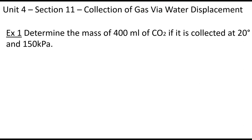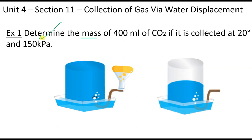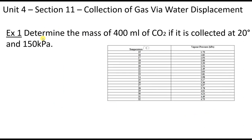Let's determine the mass of 400 mL of carbon dioxide that was collected at 20 degrees Celsius and 150 kilopascals — a rather large pressure. In this experiment, carbon dioxide is being given off; the CO2 molecules collect and push the water down, and that missing volume is going to be 400 milliliters.